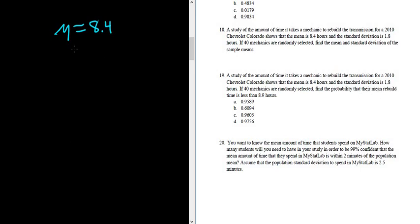And the standard deviation is 1.8. That'll be sigma equals 1.8. If 40 mechanics are randomly selected, so n is equal to 40. The n is always the sample size.